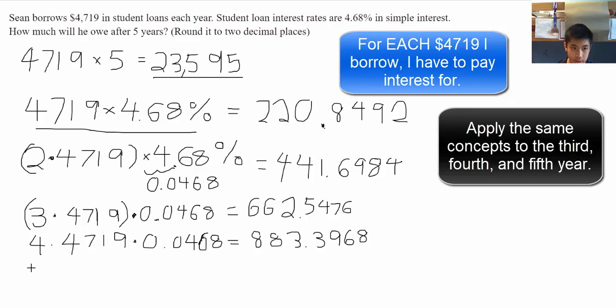And the fifth year, which is our last year, it will be 5 times $4,719 times 0.0468. This is equal to $1,104.246.